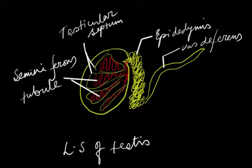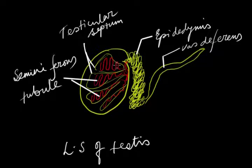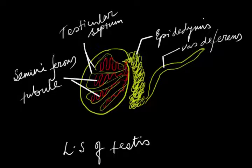Here we are going to discuss about the structure and function of testes. This is a rough diagram of testes, from which you may get rough knowledge about its structure. This is the outer membrane of testes. It is somewhat a white-shaped structure composed of several compartments, made by a septum-like structure known as testicular septum, which forms 12 to 15 compartment-like structures within the testes.